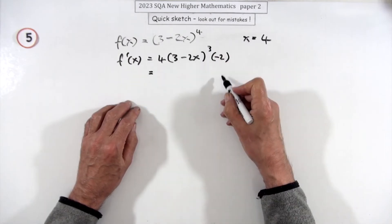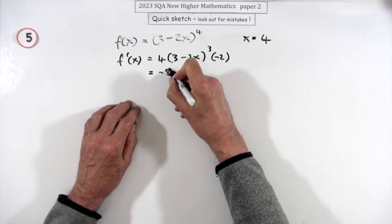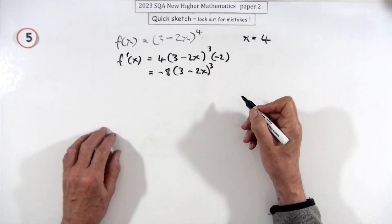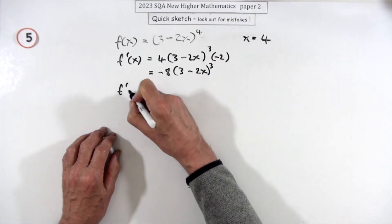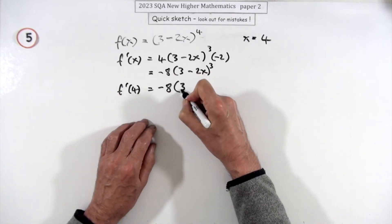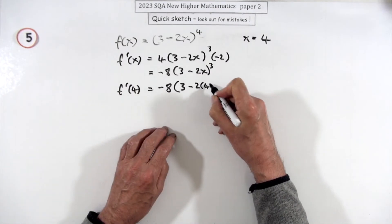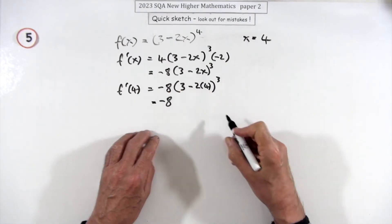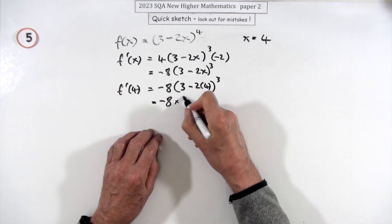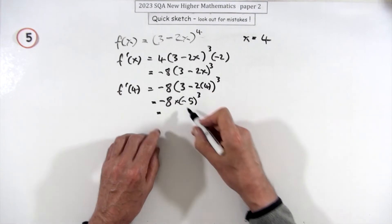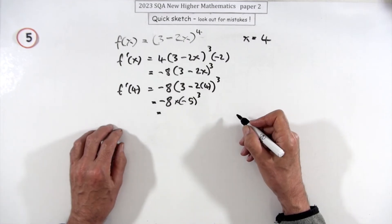So tidying that up would be -8(3 - 2x)³. Now you just say, well what's the rate of change when x is 4? Well that'll be -8 times (3 - 2 times 4)³, so it's -8 times negative 5 cubed.